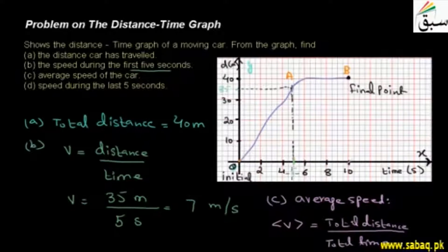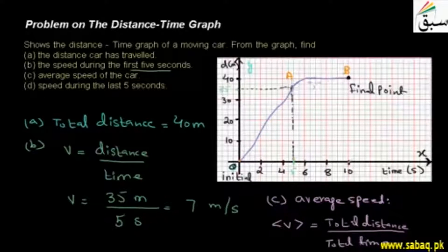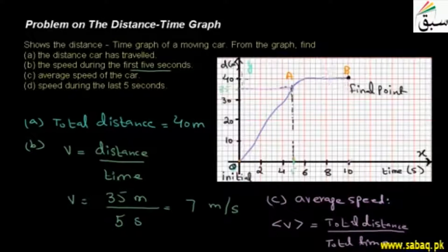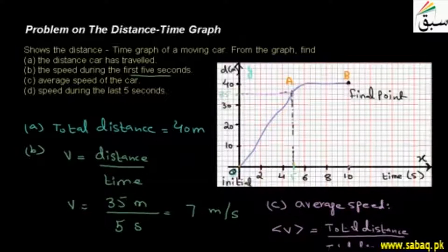The speed of the car in the last 5 seconds — the distance can be seen from point A to point B. At point A, the distance is 35 meters, and at point B, the distance is 40 meters.